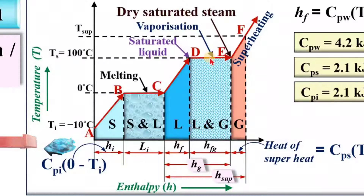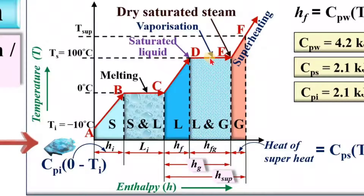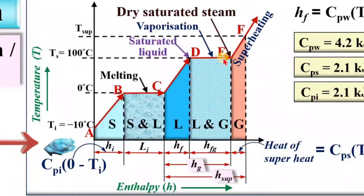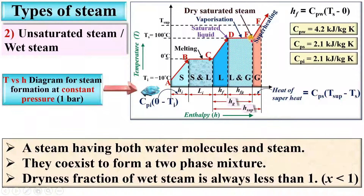At the midpoint of D to E, the dryness fraction is equal to 0.5. If it is near to D, the dryness fraction is less than 0.5, and if it is near to E, the dryness fraction is greater than 0.5.